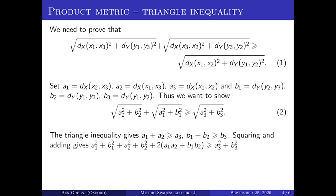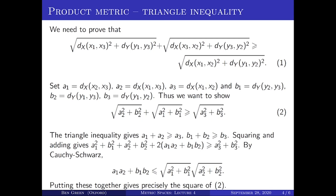If you square those two statements and add them together, you get: a1 squared plus b1 squared plus a2 squared plus b2 squared plus twice (a1 a2 plus b1 b2) is at least a3 squared plus b3 squared. That's close to being the square of the inequality we want to prove. By Cauchy-Schwarz, a1 a2 plus b1 b2 is bounded above by the square root of (a1 squared plus b1 squared) times the square root of (a2 squared plus b2 squared). Combining these two inequalities gives exactly the square of the triangle inequality for the product metric. So again, it boils down to the Cauchy-Schwarz inequality.